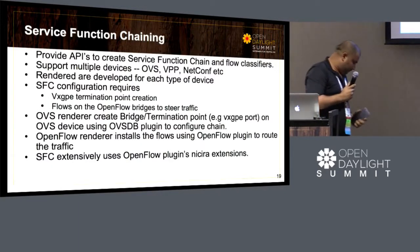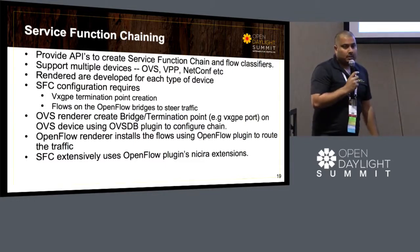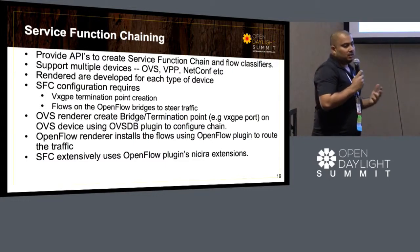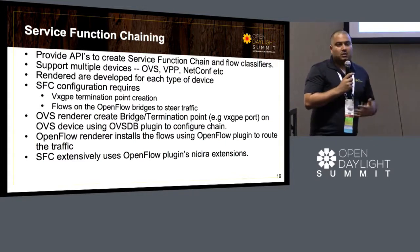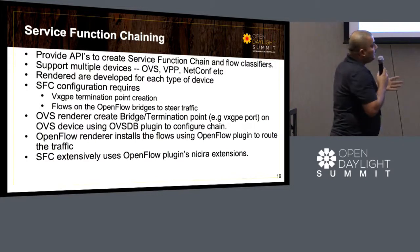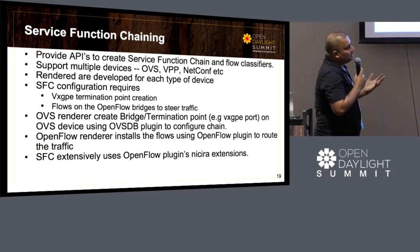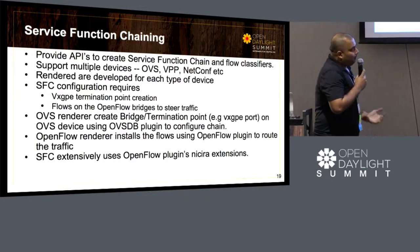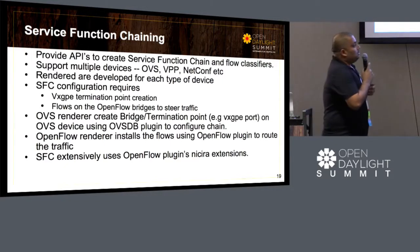Service function chaining is another use case that follows a similar pattern but for a different purpose. SFC wrote renderers for different kinds of devices, and those renderers use different protocols to configure bridges. SFC requires creating a VXGPE port for SFC purposes and installs flows that heavily use NSH extensions. They use the extension framework in OpenFlow plugin — where you can add your own extensions — which makes OpenFlow plugin very critical for SFC. Using both renderers together makes things easier.